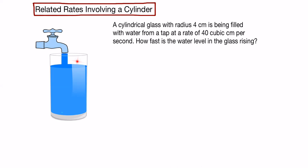In this question, we're filling a cylindrical glass with water from a tap. We're given the radius of the glass, the rate at which water is flowing out of the tap into the glass, and we're asked to find how fast is the water level in the glass rising.